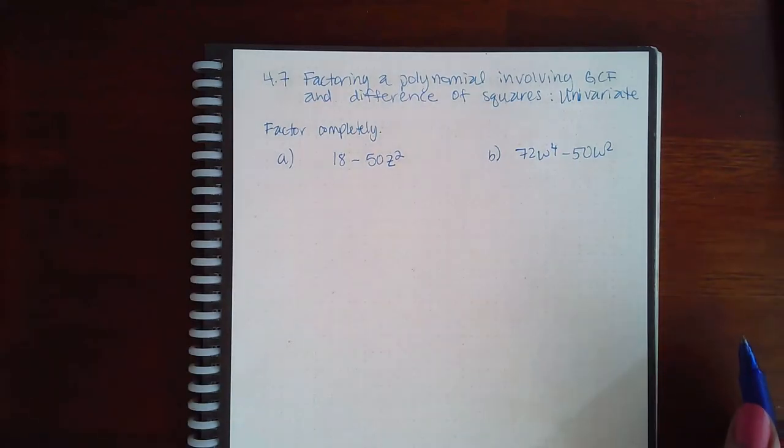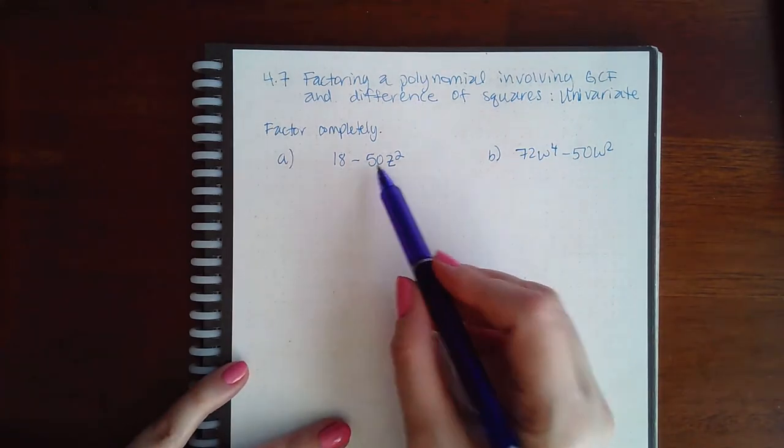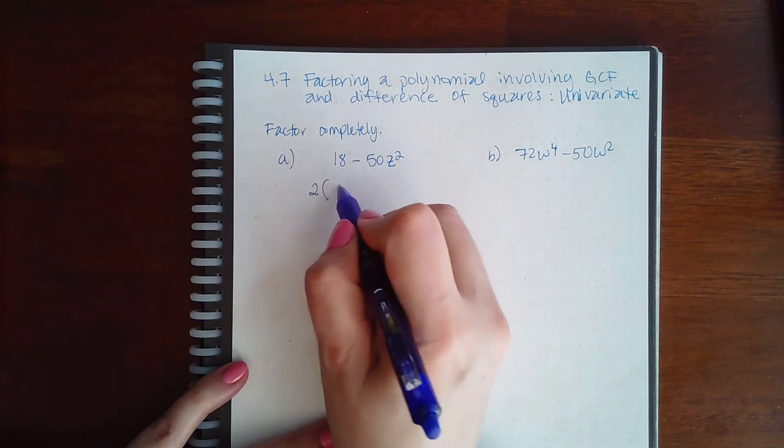Here we're working on 4.7, factoring a polynomial involving GCF and difference of squares. First, we have to identify whether or not we have a GCF, and here we do. We can divide both of these by two.